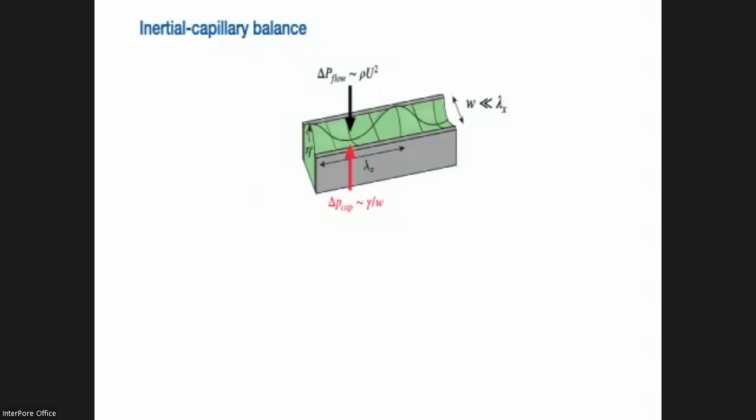So we assume that the width here is much smaller than the streamwise variation and the streamwise wavelength of the wave. So making inertial capillary balance, we can see that we may be able to balance the imposed inertial force from the flow if the grooves are not too wide and if the surface tension is not too low. So this is just a force order of magnitude estimate.